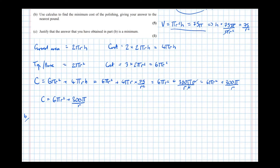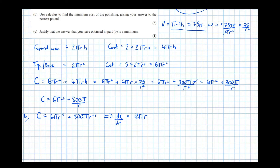Using calculus means differentiating. We rewrite C in a differentiable form: C = 6πr² + 300πr⁻¹. Differentiating: dC/dr = 12πr − 300πr⁻². At a stationary point (minimum), dC/dr = 0.